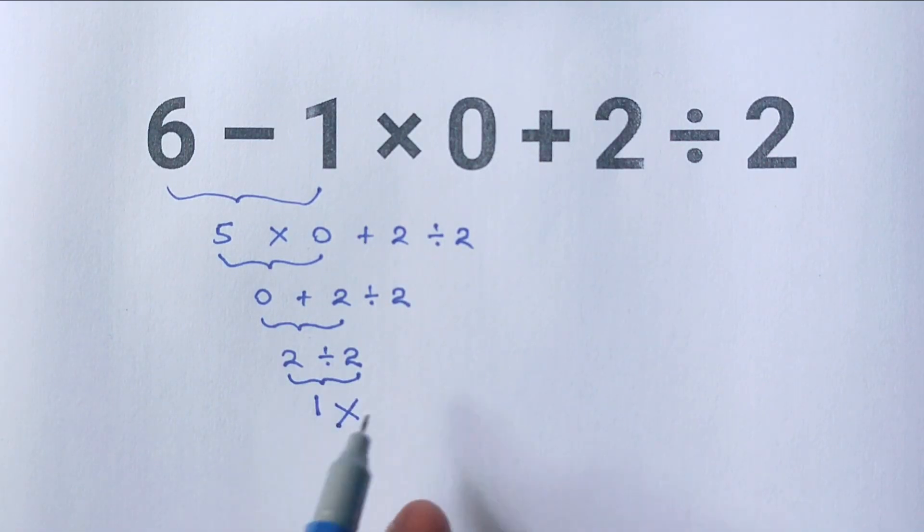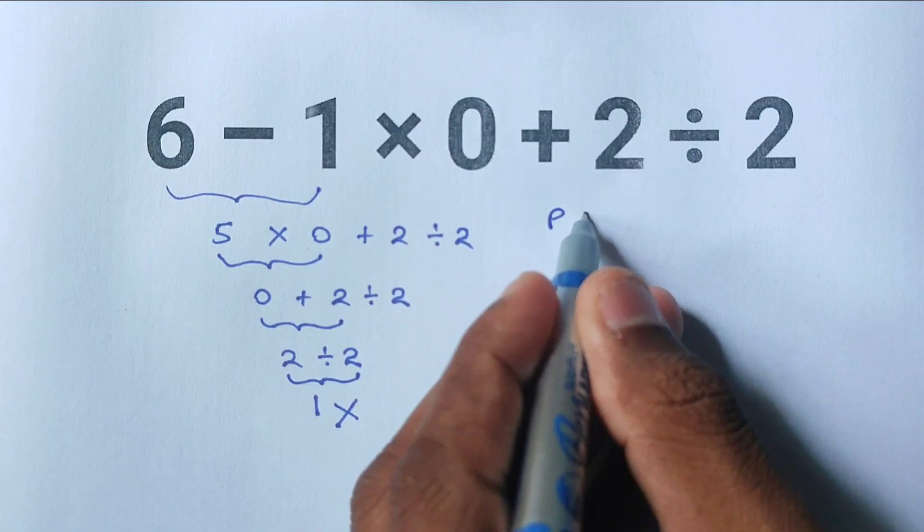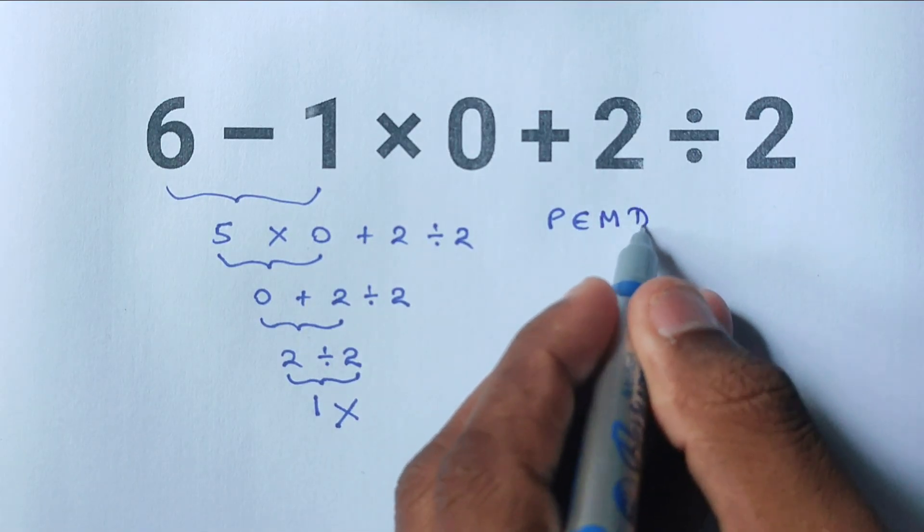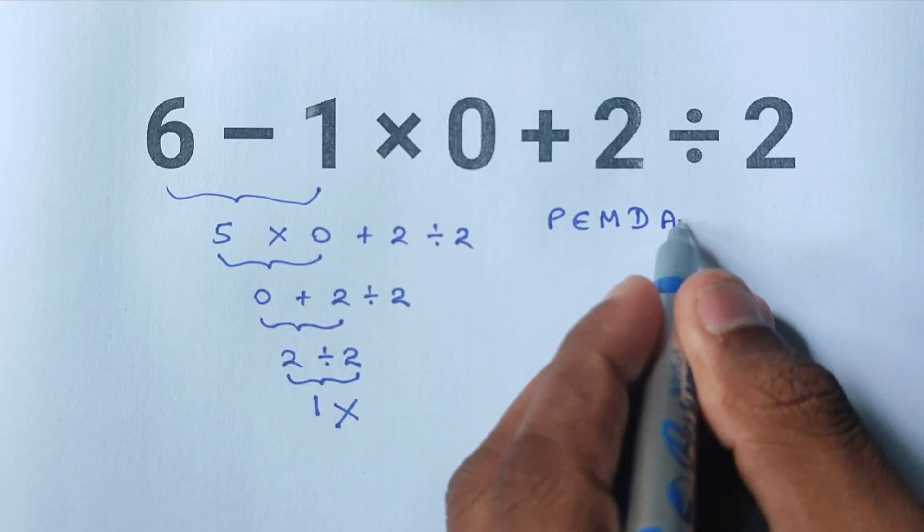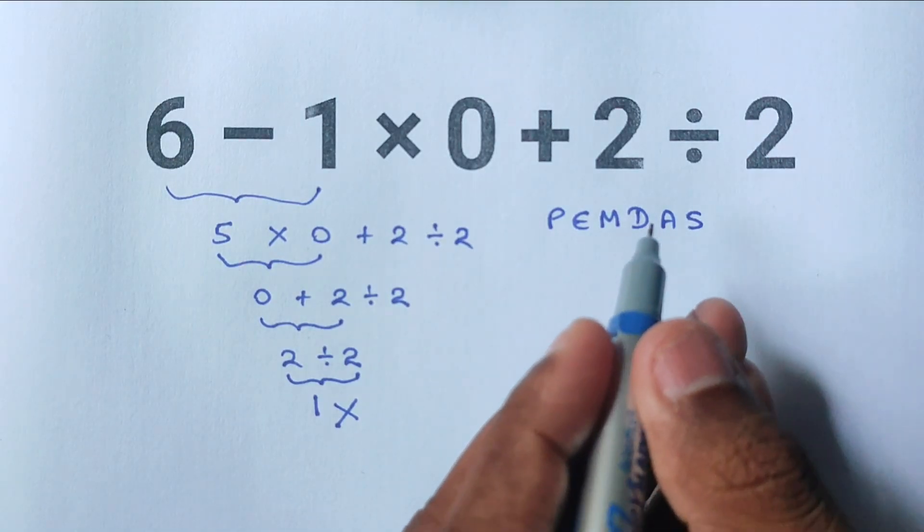The mistake happens because when solving mathematical expressions like this, we have to follow the order of operations. I'm sure you've heard of the rule PEMDAS, or sometimes called BODMAS. In PEMDAS: P stands for parentheses, E stands for exponents, M stands for multiplication, D stands for division, A stands for addition, and S stands for subtraction.